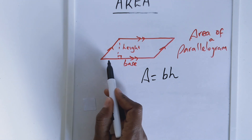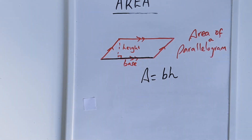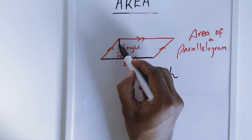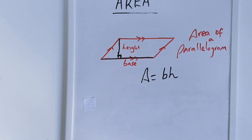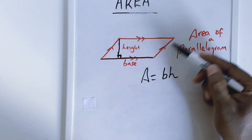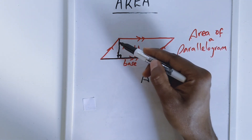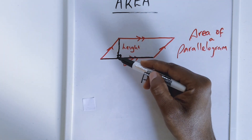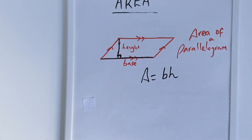Where base is this distance here, and the height is that perpendicular line meeting the base at 90 degrees. If you are given the slanted side, you cannot use that as the height. You have to always find the perpendicular height. Let us see an example.